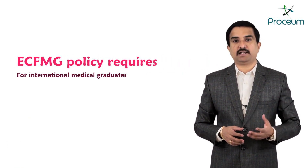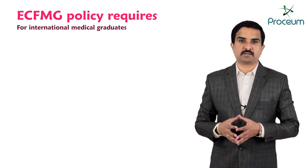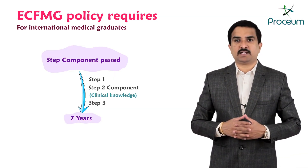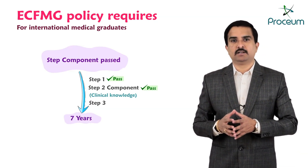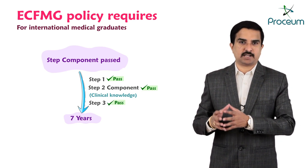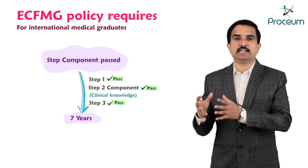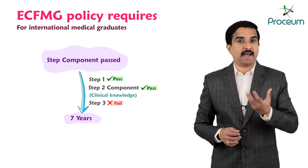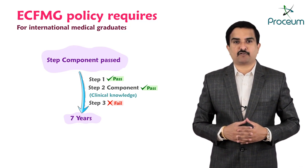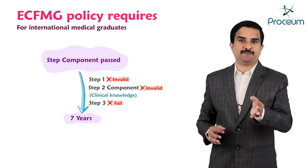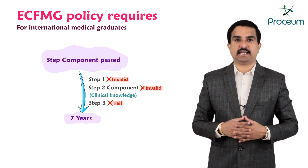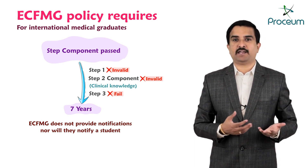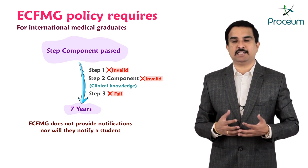ECFMG policy requires international medical students or graduates to pass the USMLE steps and step components required for ECFMG certification within a seven-year period. Once a student passes a step or step component, they have 7 years to pass all other required steps or components. If all required steps are not completed with a passing grade within 7 years, the earliest USMLE passing performance will no longer be valid for ECFMG certification. Importantly, ECFMG does not provide notifications of upcoming deadlines, nor will they notify a student if passing performances become invalid.